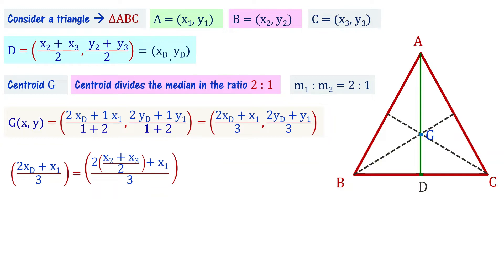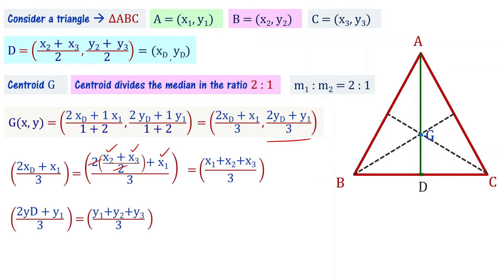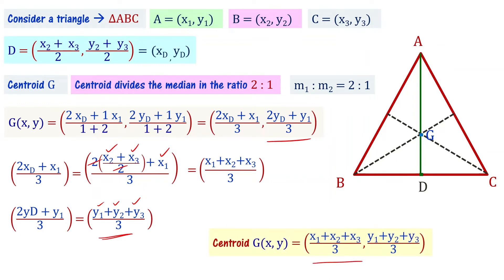Substituting into the section point formula: 2 times xD plus 1 times x1, divided by 3. Since xD equals (x2 + x3)/2, the 2 and 2 cancel, giving us (x1 + x2 + x3) divided by 3. Similarly, the y-coordinate is (y1 + y2 + y3) divided by 3. So the centroid is ((x1 + x2 + x3)/3, (y1 + y2 + y3)/3).